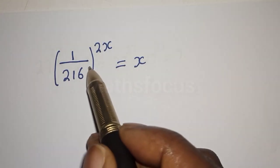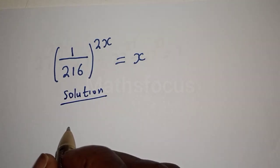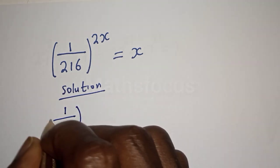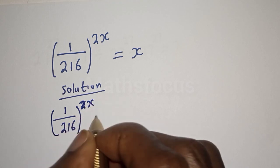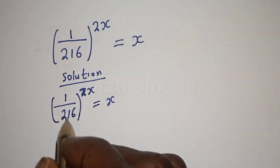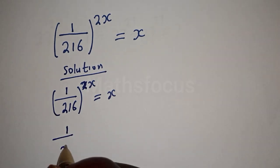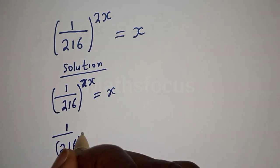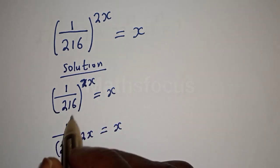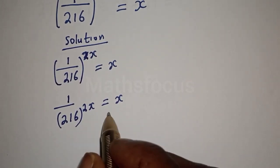We want to find the value of x from this math problem. The equation is: one over 216 raised to the power 2x is equal to x. This is the same as one over 216 raised to power 2x equals x, because one raised to the power 2x is the same as one. Now let's find the reciprocal.